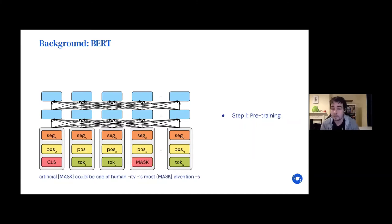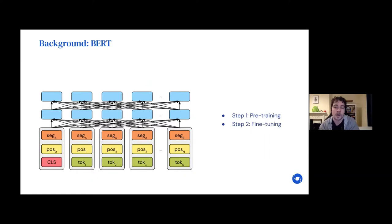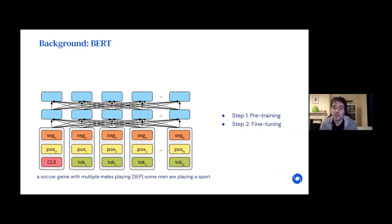This model is generally pre-trained using masked language modeling, where a random fraction of words in the input is randomly masked and the corresponding masked words are then predicted in the output. In the second step, BERT is typically fine-tuned on data of a task of interest — such as natural language inference — and then evaluated on the task, where one can typically expect close to state-of-the-art performance.